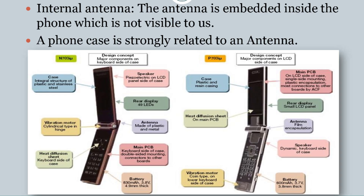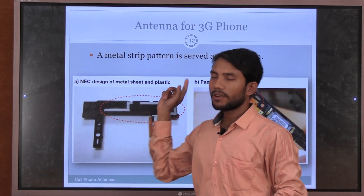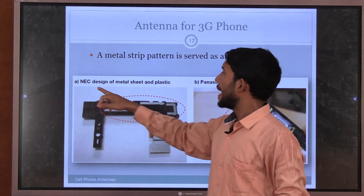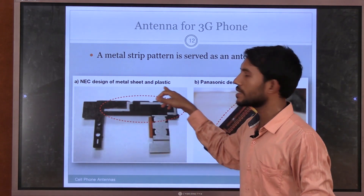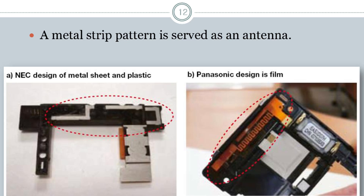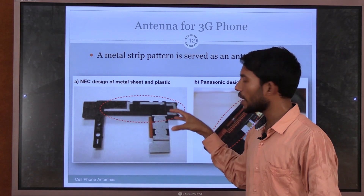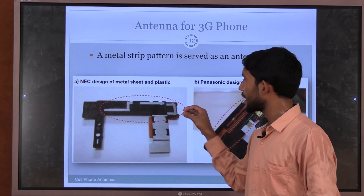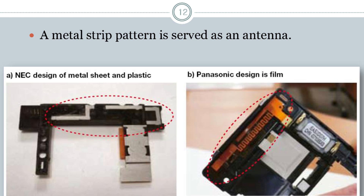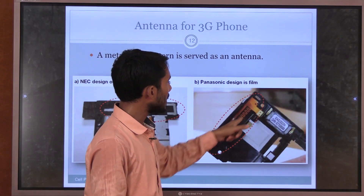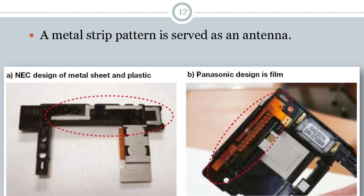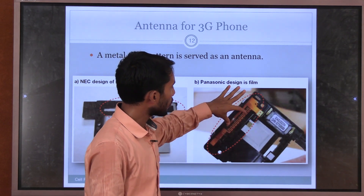For the antenna in a 3G phone, the NEC — New Engineering Concept — design uses metal, steel, and plastics. This concept designs metal and plastic components inside the cell phone and LED devices so they can fit closely. Inside this structure we can fit the antenna. The antenna is fitted inside the metal, steel, and plastic on the circuit board or ICD board.